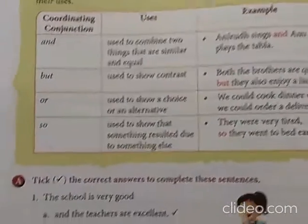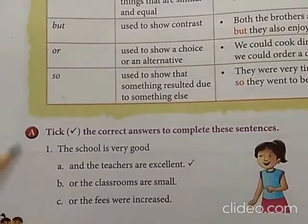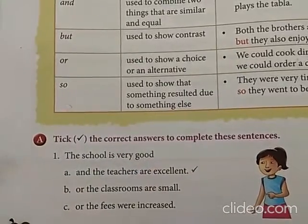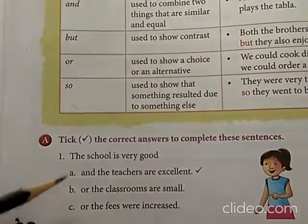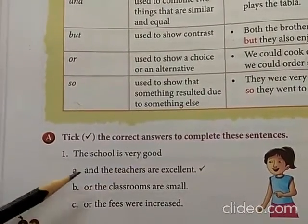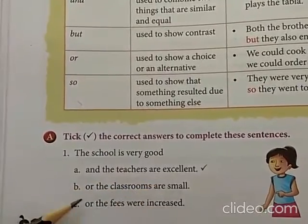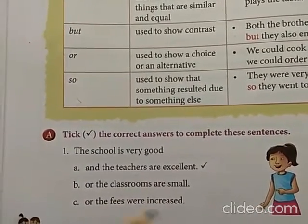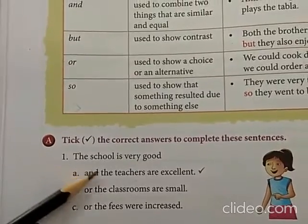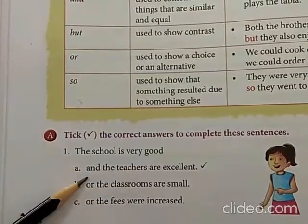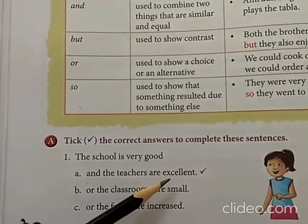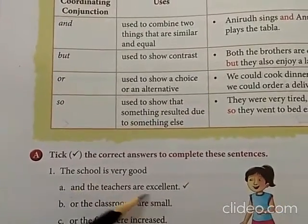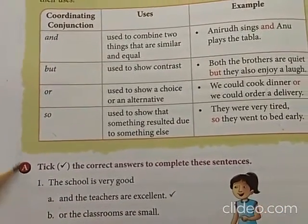So let's do the exercises now — Exercise A. Choose the correct answers to complete these sentences. First: The school is very good — options are 'and the teachers are excellent', 'or the classrooms are small', or 'or the fees were increased'. The answer is: The school is very good and the teachers are excellent. You are appreciating the school, so the first option is correct.